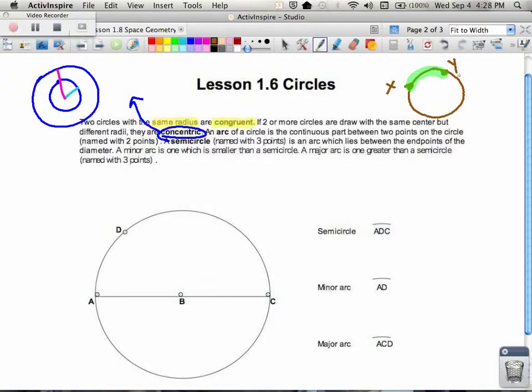A semicircle is named with three points and it's an arc that lies between the endpoints of the diameter. A minor arc is one which is smaller than a semicircle. A major arc is one that's greater than a semicircle and named with three points. So I gave an example down below here; I'll show you what they are and how they're named.